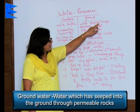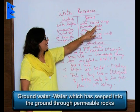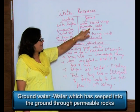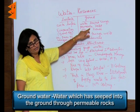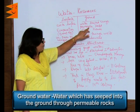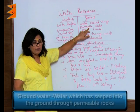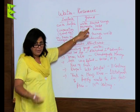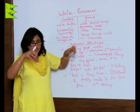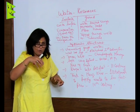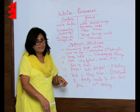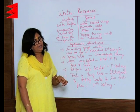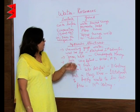Ground water has gone into the ground inside the earth because the water has seeped through permeable rocks. Permeable rocks are something which permits, which lets the water go inside the earth.